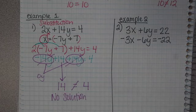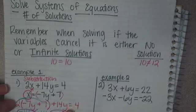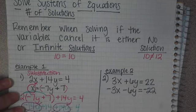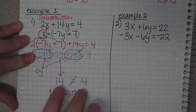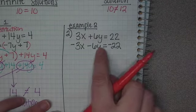Again, when you're solving a system, or when you're solving any time, and your variables cancel, it's either no solution or infinite. Since the two things that we were left with were not equal, it's no solution. Now, let's solve this one.